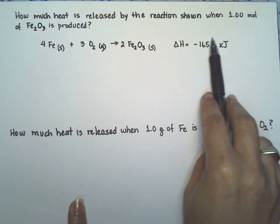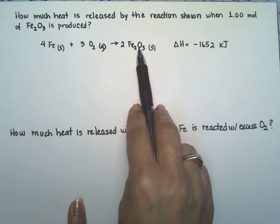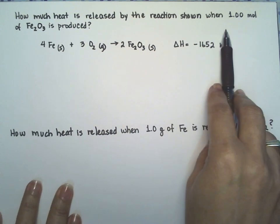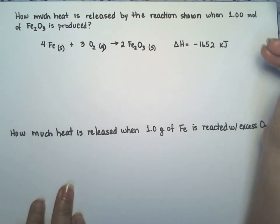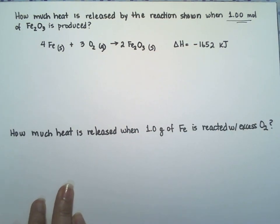Notice that this delta H is actually for two moles, the formation of two moles of di-iron trioxide. So when they ask us to calculate the heat for one mole, we're going to have to make some adjustments.